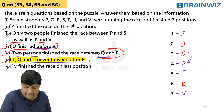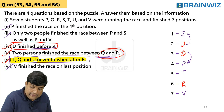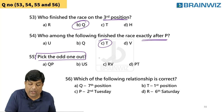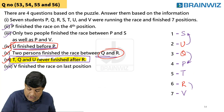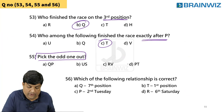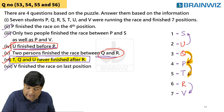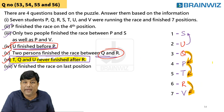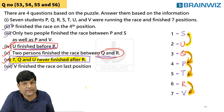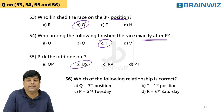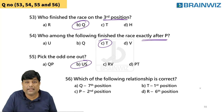Third question: pick the odd one out. First option is QP — Q came first, then P, so that order is correct. Next is US — the order is different here. Third is RV — R then V, that order is correct. Last is PT — P then T, that order is correct. But US has a different order, so US is the option that does not fit — US is the best answer.